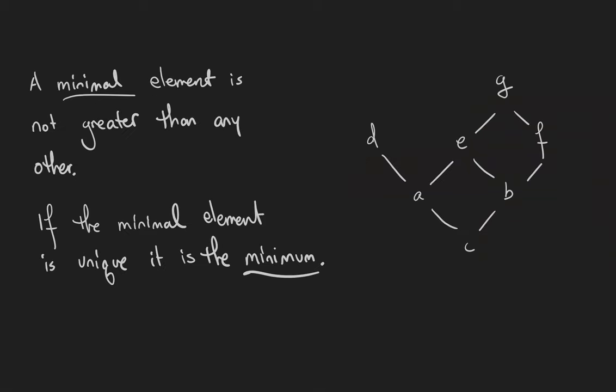A minimal element is one in a partial order that is not greater than any other. If the minimal element is unique we call it the minimum. Likewise, a maximal element is one that is not less than any other, and if the maximal element is unique we call it the maximum. So these definitions are nearly identical just in the other direction.